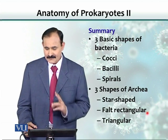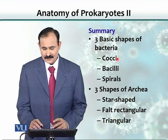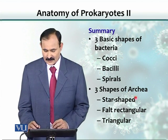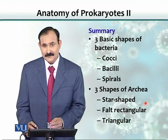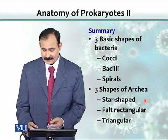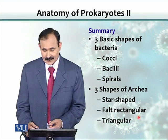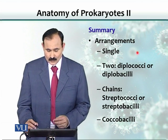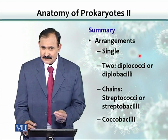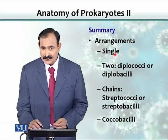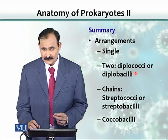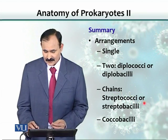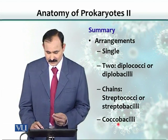In summary, there are three basic shapes of bacteria: spherical, rod-shaped, and curved. Archaea are also classified into three shapes: star, flat/rectangular, or triangular. Regarding cell arrangements, they may be single, two (diplococci or diplobacilli), chains (streptococci or streptobacilli), or coccobacilli.